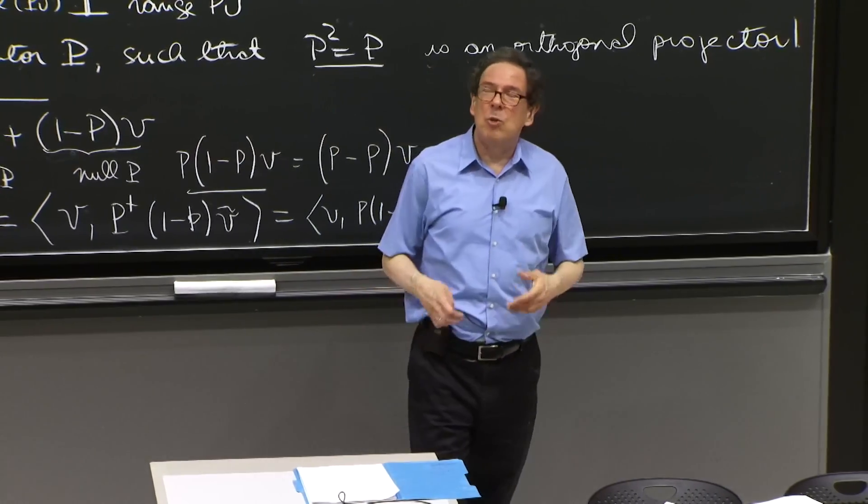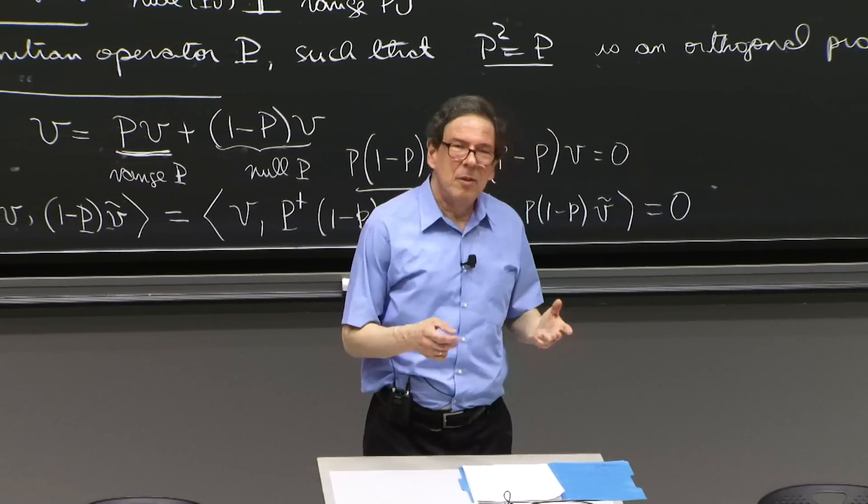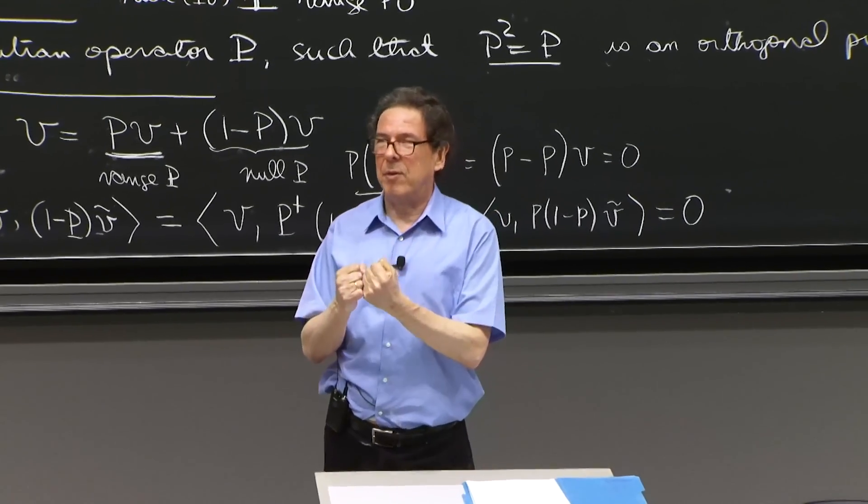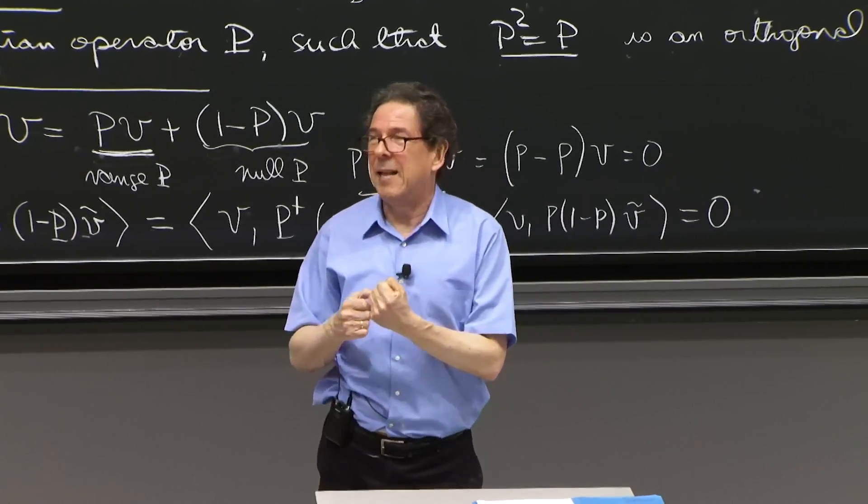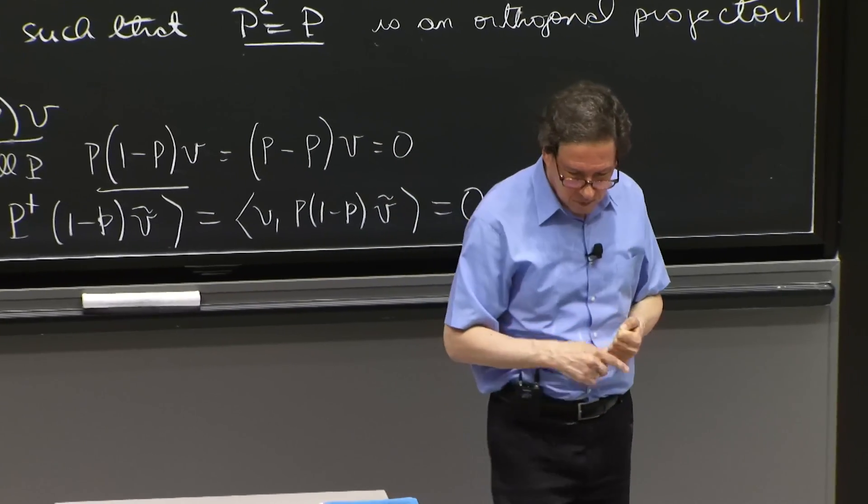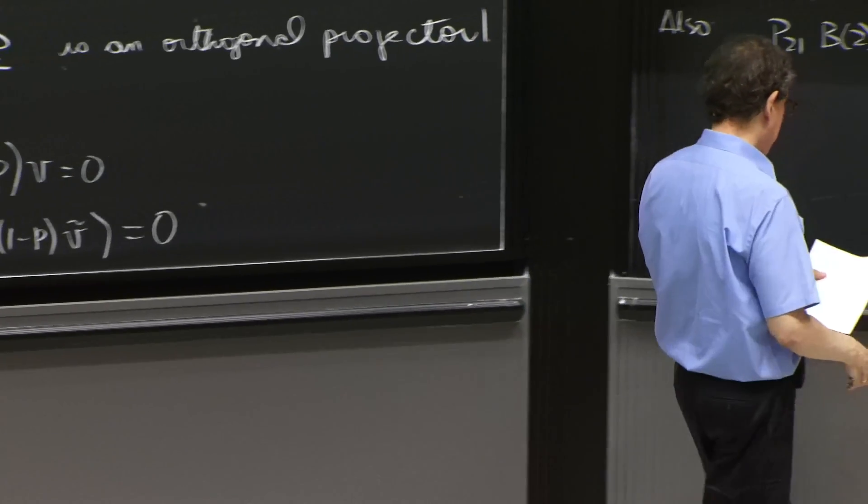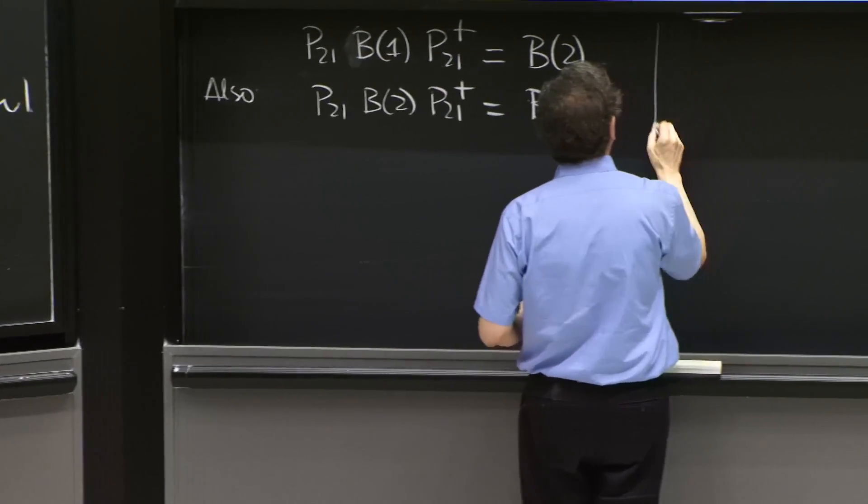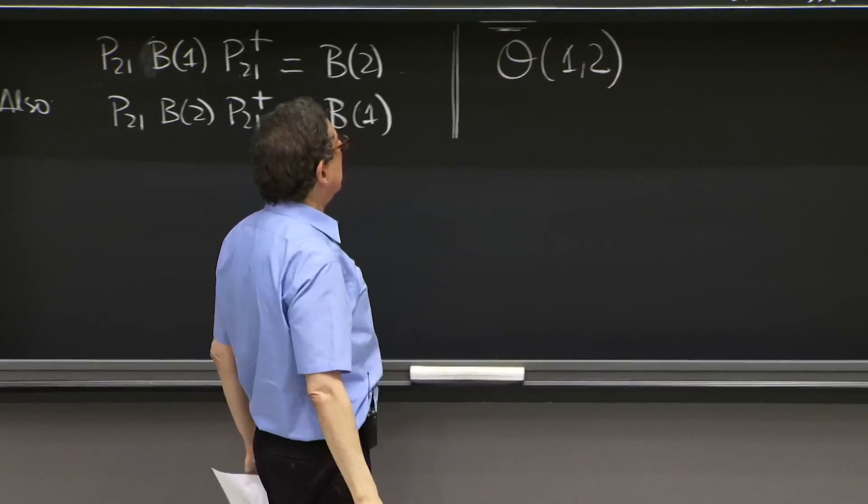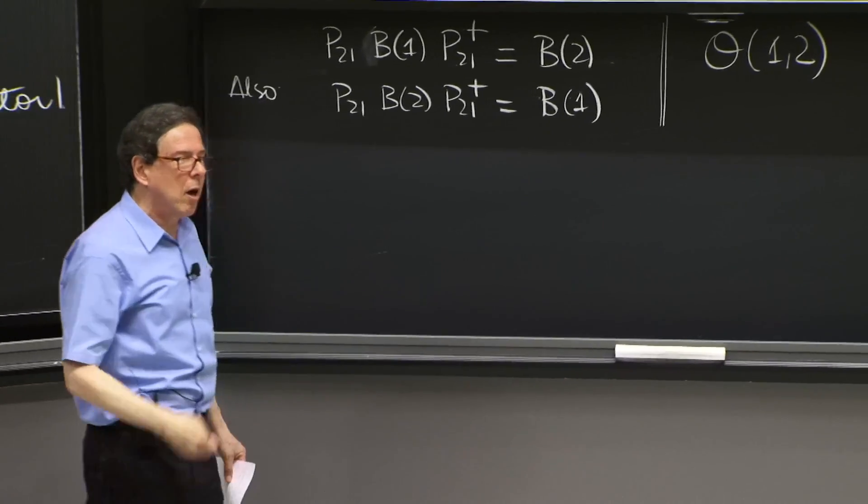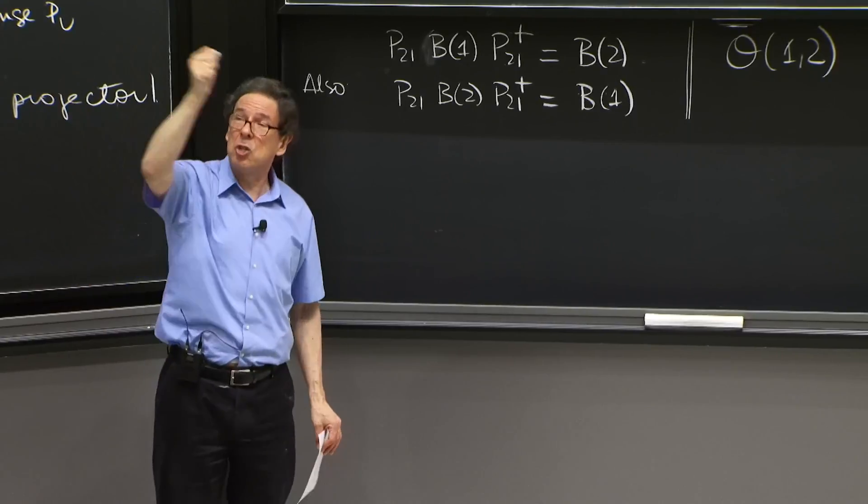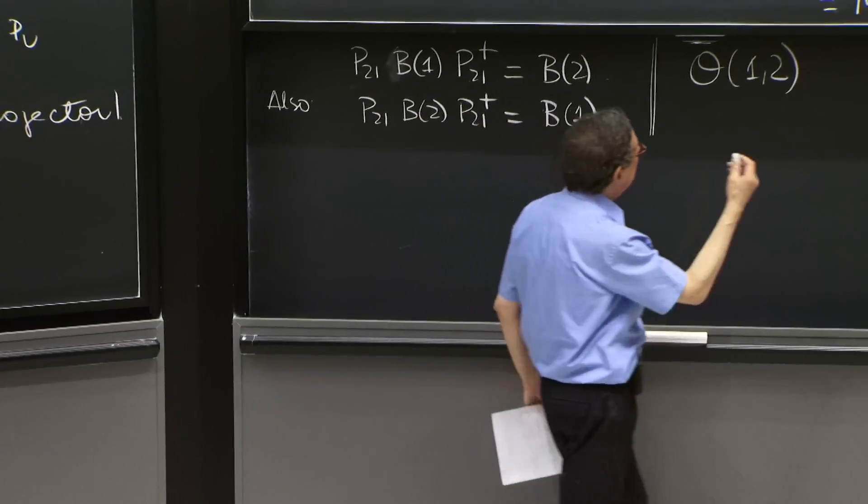So what is the use of this thing? You may have a Hamiltonian, and you want to understand what it means to have a symmetric Hamiltonian. And these operators allow you to do that. So for example, you may have an operator O12. What is an operator O12? It's an operator built on things that act on 1 or act on 2.